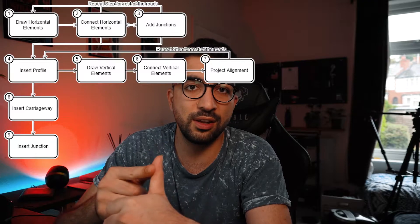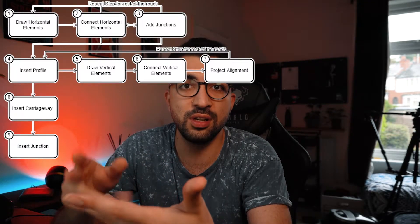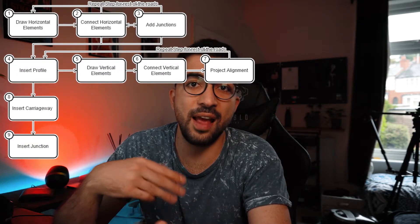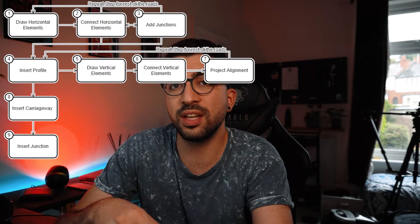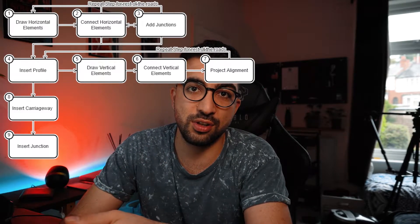We're going to go through the steps of creating the horizontal alignment, connecting them, defining a junction, bringing our profile in, making a vertical alignment and then projecting it, inserting a carriageway, and then at the end inserting our junction. If you're just curious about the junction-insertion step, skip to the timestamps below, but we're going to cover everything briefly.